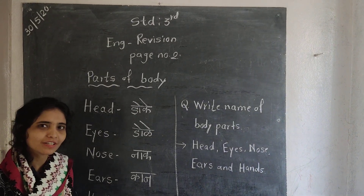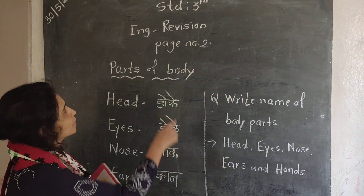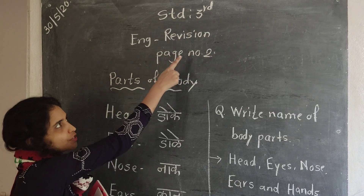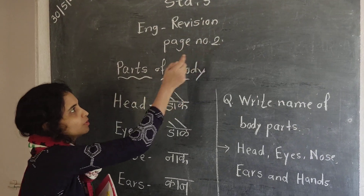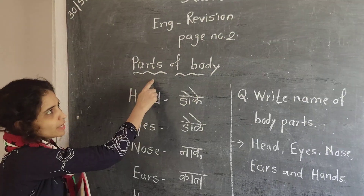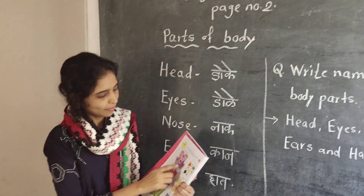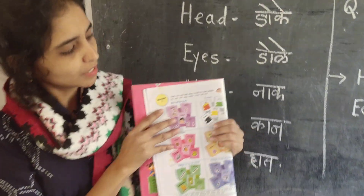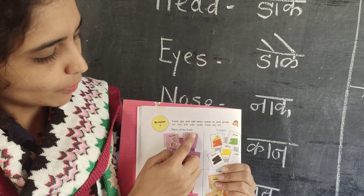Good morning children. Today we are going to learn Standard Third English, page number two — few parts of the body. See here, parts of the body.